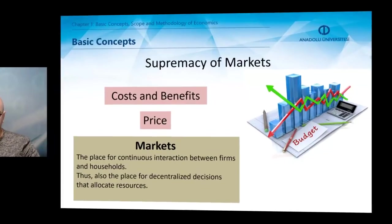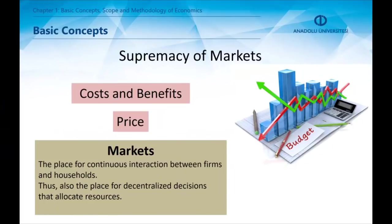Markets are of the highest importance in modern economic theory. Markets are the places where interactions between firms and households happen. Those interactions are the main source of resource allocation, which is the main problem in economics. In markets, actors of the economy optimize resource allocation using their costs and benefits. Price is the most important part of a market.